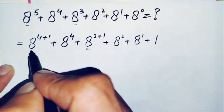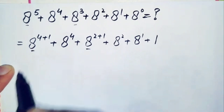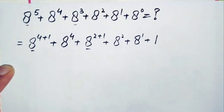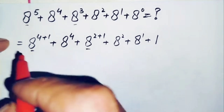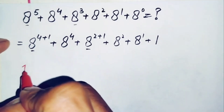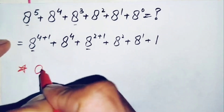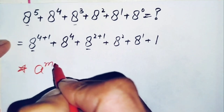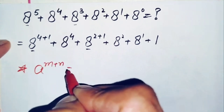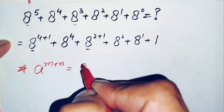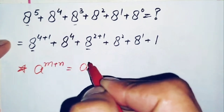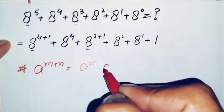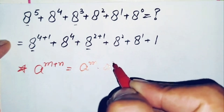Here in these two terms we will use an exponential math property. The property is: a raised to power m plus n can also be written as a raised to power m times a raised to power n.